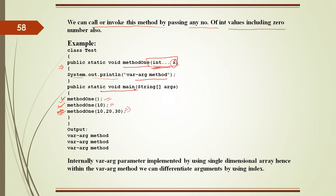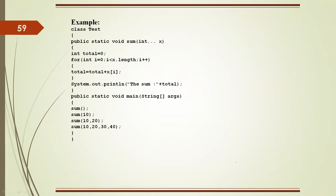Internally, a varargs parameter is implemented using a single-dimensional array. Within a varargs method, we can differentiate arguments by using the index.